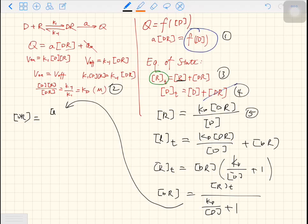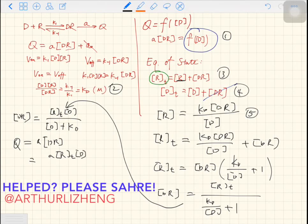We have RT D over D plus KD. We assumed Q equals A, which is the intrinsic activity, times DR.